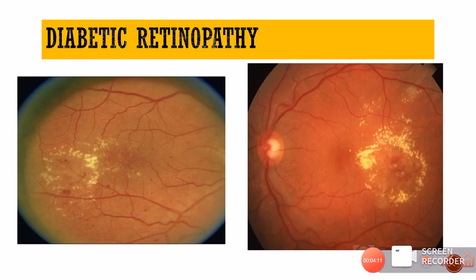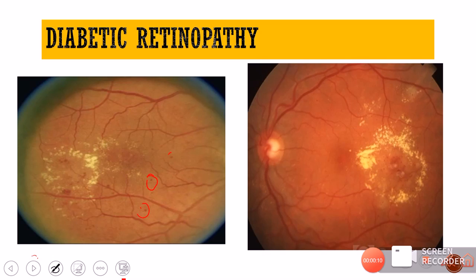In diabetic retinopathy, there will always be accompanying signs along with the hard exudates. You can see multiple microaneurysms and dot-blot hemorrhages confirming diabetic retinopathy. The hard exudates are arranged in the form of rings — this circinate pattern is visible clearly in the fundus image.